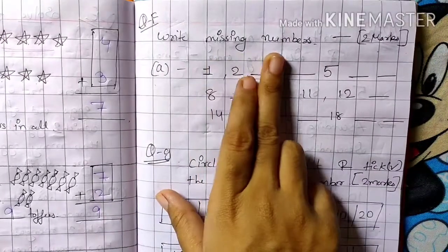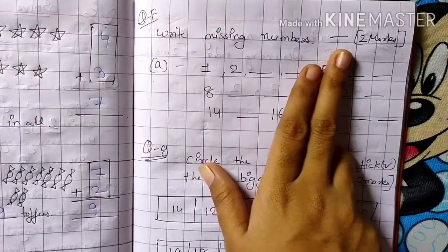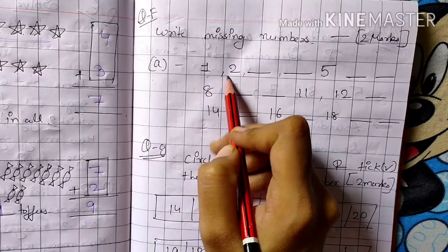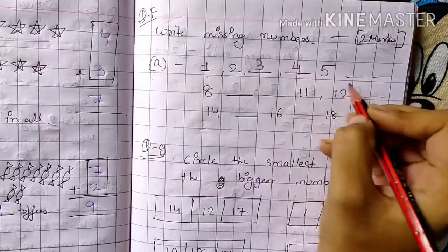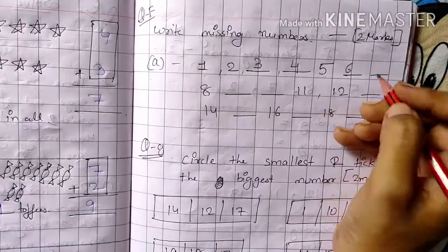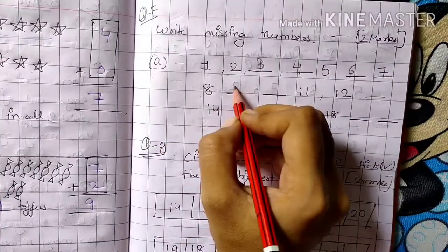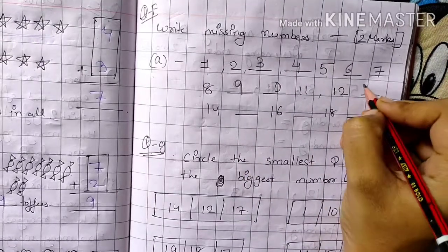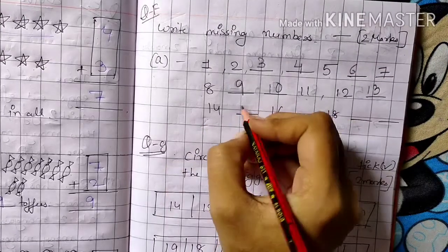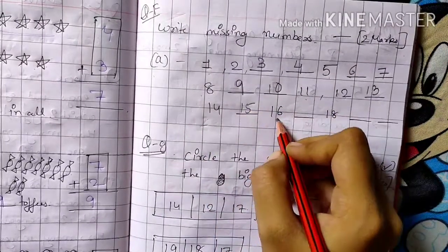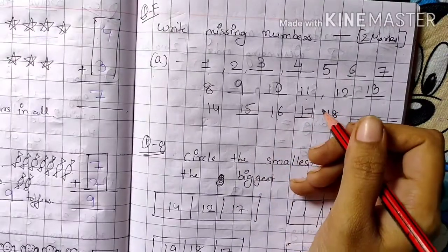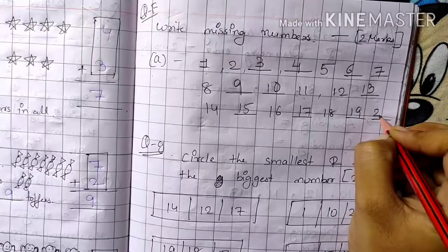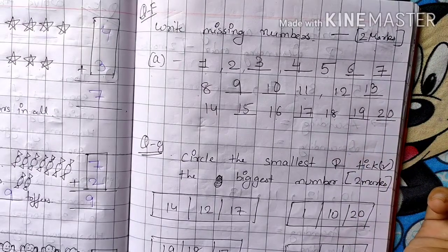Question number F: Write the missing numbers, which carries two marks. One के बाद two, two के बाद three, three के बाद four, then five, six, seven, eight, nine, ten — continuing: eleven, twelve, thirteen, fourteen, fifteen, sixteen, seventeen, eighteen, nineteen, then twenty.